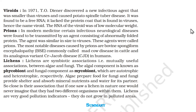In modern medicine, certain infectious neurological diseases were found to be transmitted by an agent consisting of abnormally folded protein. The agent was similar in size to a virus and these agents were called prions. The most notable diseases caused by prions are mad cow disease in cattle and its analogous variant Creutzfeldt-Jakob disease (CJD) in humans.